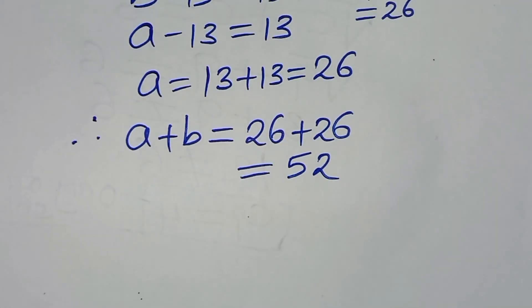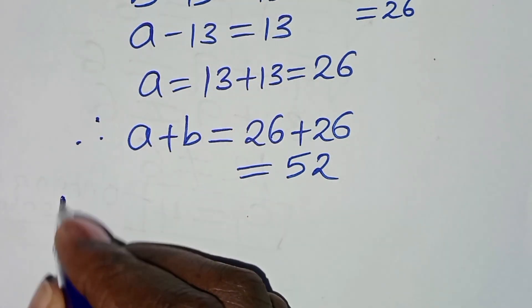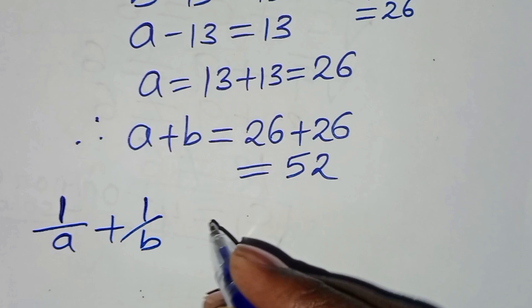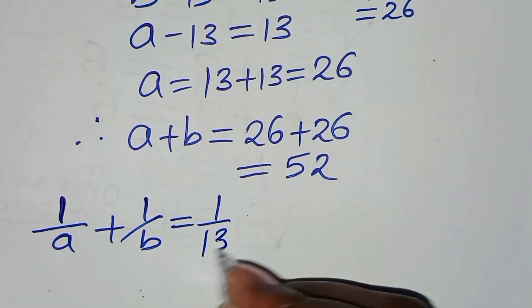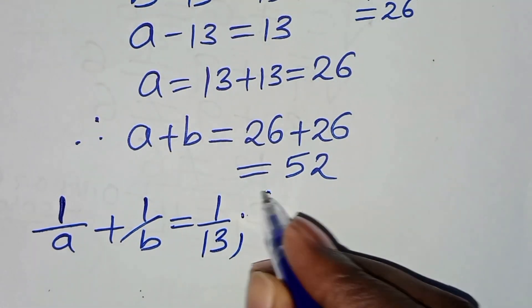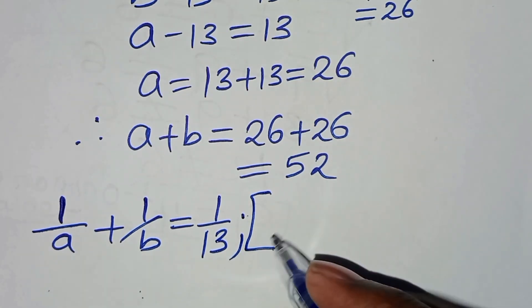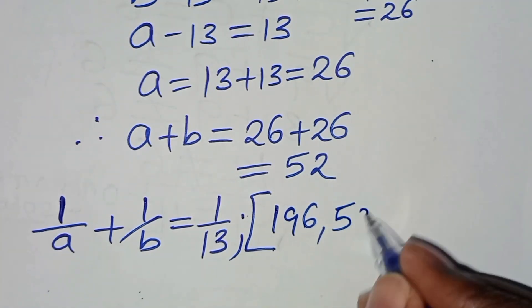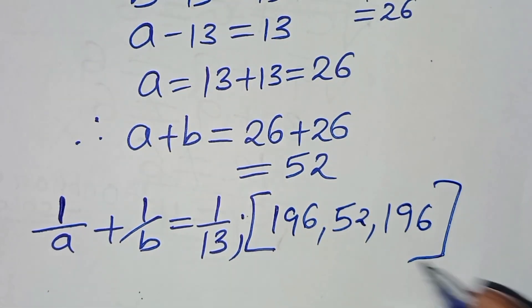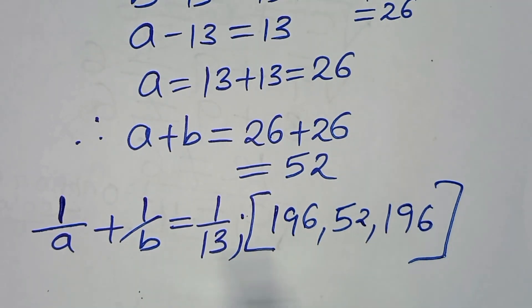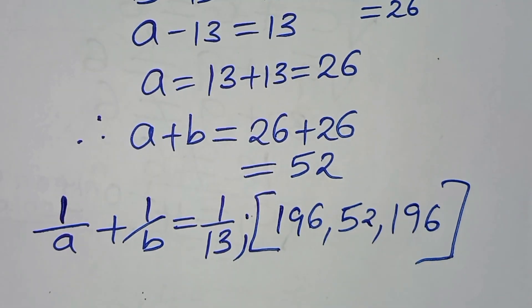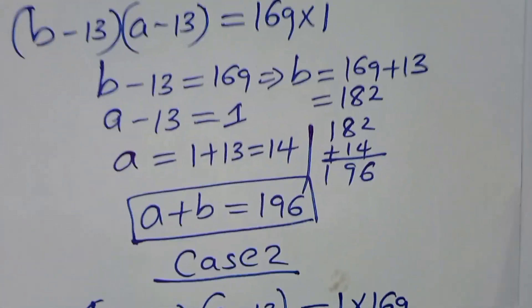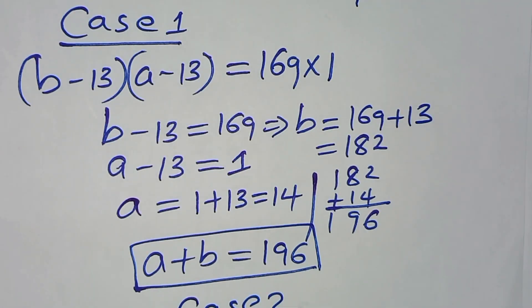So, 1 over A plus 1 over B equals 1 over 13, and the solutions are A plus B equals 196, A plus B equals 52, and A plus B equals 196. These are the solutions to this algebra problem. If you followed the steps, like this video and subscribe. See you in the next video, bye-bye.